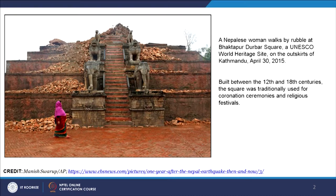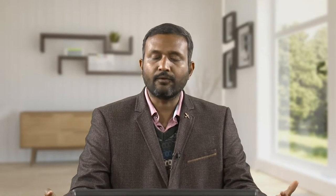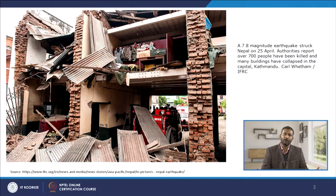A lot of efforts have been taken up in the reconstruction of these historic buildings. This place is known as Bhaktapur, listed under the UNESCO World Heritage Site in Kathmandu. It dates back to the 12th and 18th centuries, where this square was traditionally used for coronation ceremonies and religious festivals. Many residential buildings got damaged, so there was an obvious need for reconstruction — not only from a shelter standpoint, but also to rebuild the lost heritage.